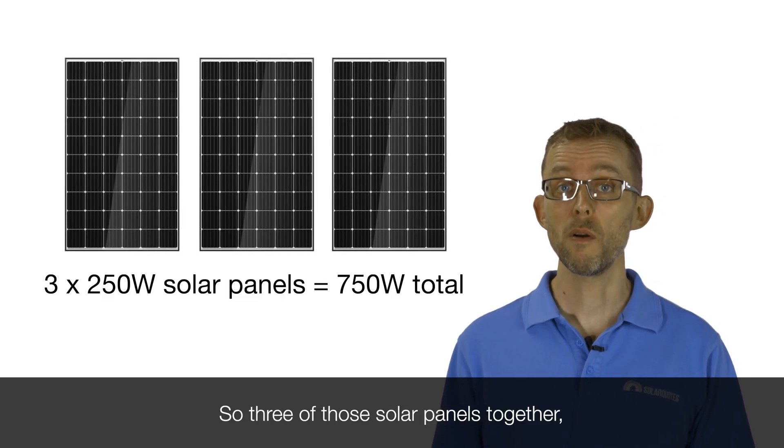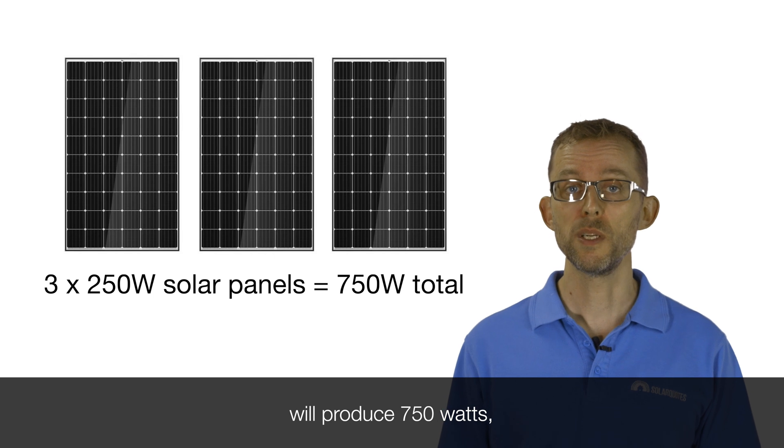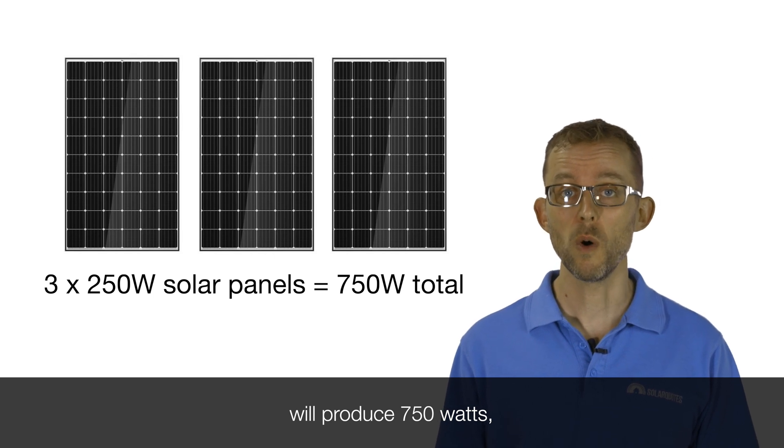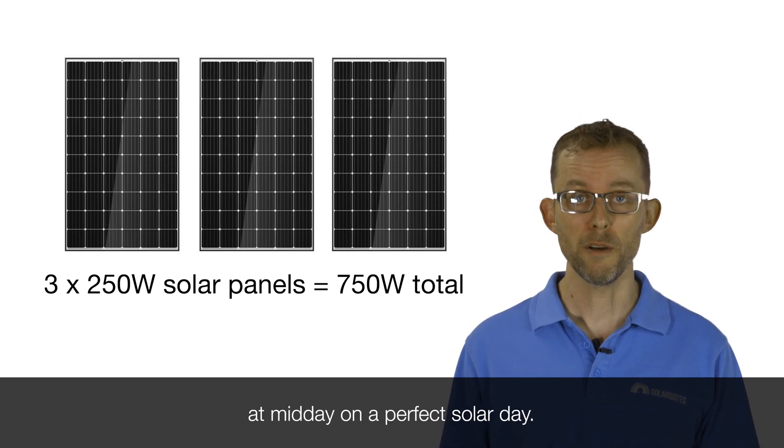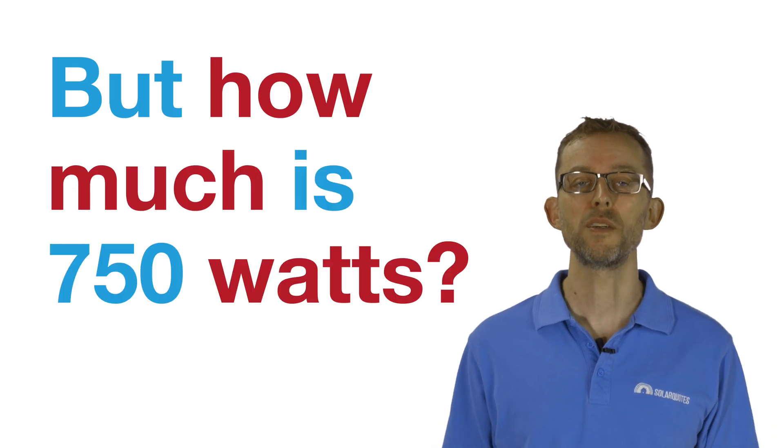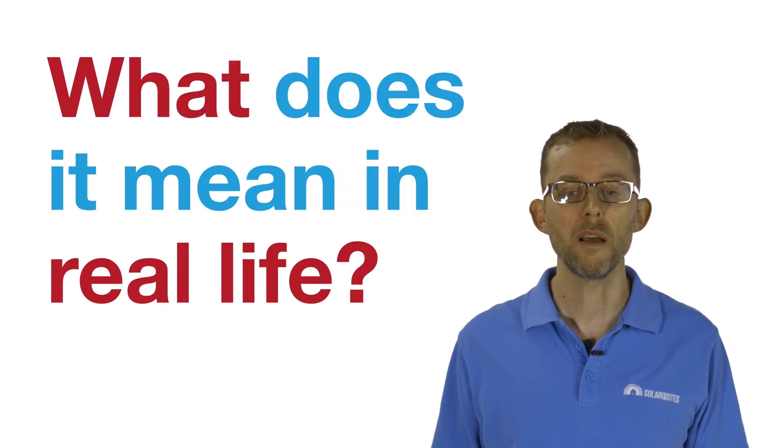So three of those solar panels together will produce 750 watts at midday on a perfect solar day. But how much is 750 watts? What does it mean in real life?